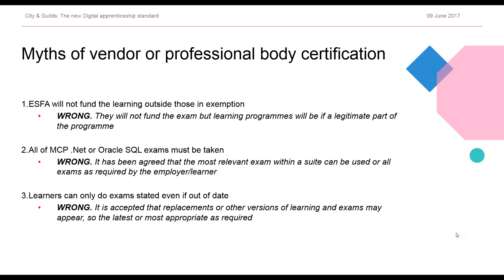Some issues around vendor or professional body certification: there is no funding for additional knowledge modules taken outside of the minimum required within the standards. If an employer wants apprentices to take additional examinations for professional or vendor certification, that funding is not available — the funding is available for the learning, but examination fees cannot be paid from the apprenticeship funding pot. That would have to be paid as an additional cost. However, any costs associated with delivering the learning can be paid from the apprenticeship funding.